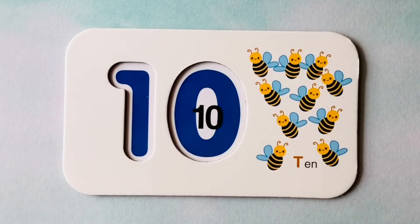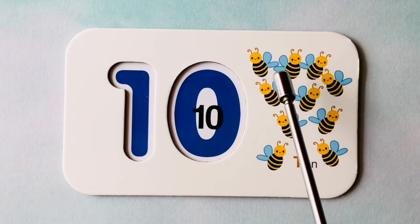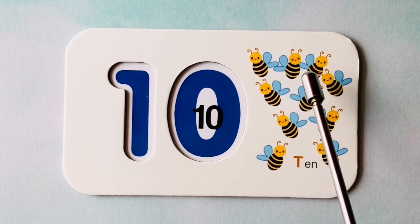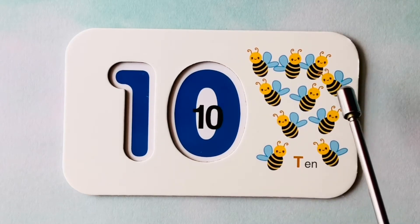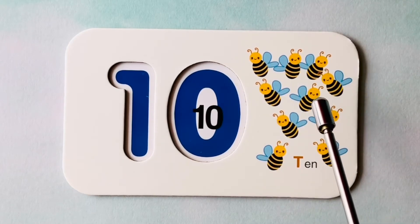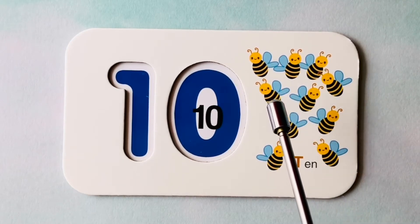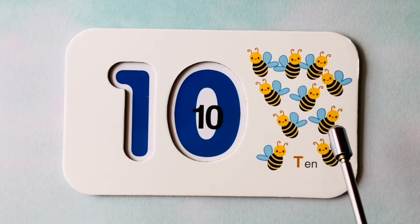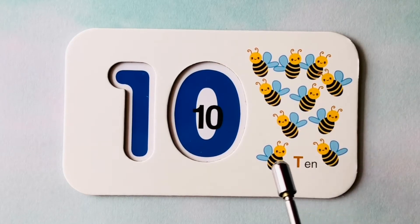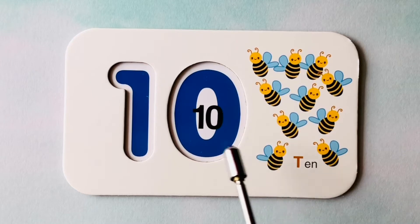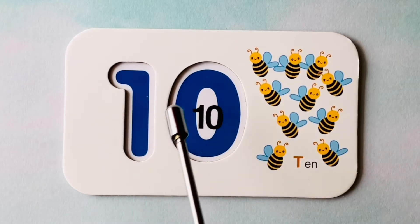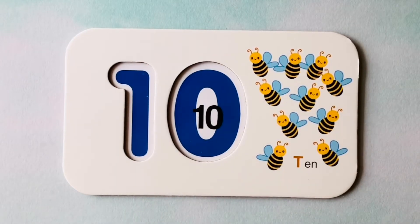How many bees do you see? I see one, two, three, four, five, six, seven, eight, nine, ten bees. This is the number ten. Great job.